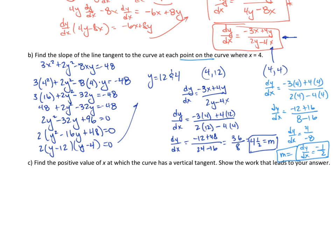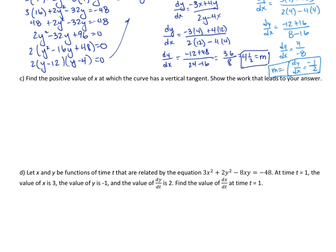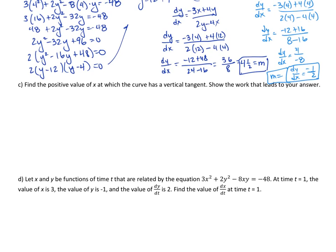Moving on to part C: Find the positive value of x at which the curve has a vertical tangent. Show the work that leads to your answer. We have our dy/dx, which we had solved for already: dy/dx equals negative 3x plus 4y, all divided by 2y minus 4x. Now we want a vertical tangent. This was our slope formula. How do we get a vertical tangent? Well, when something's undefined — when the bottom is equal to 0. So, we need 2y minus 4x to equal 0. Well, 2y would end up being 4x, so y equals 2x.